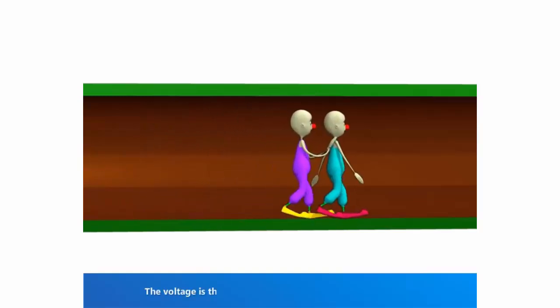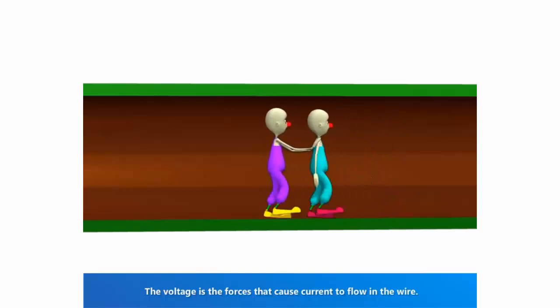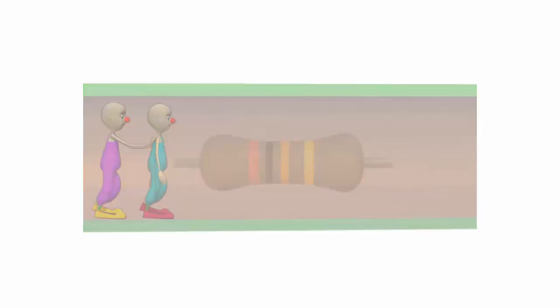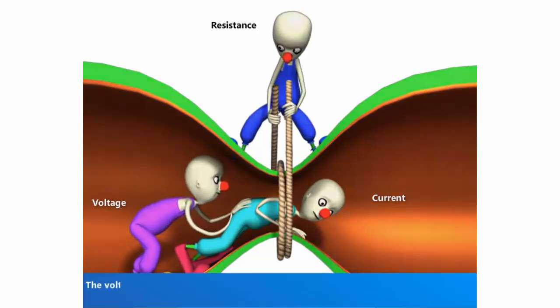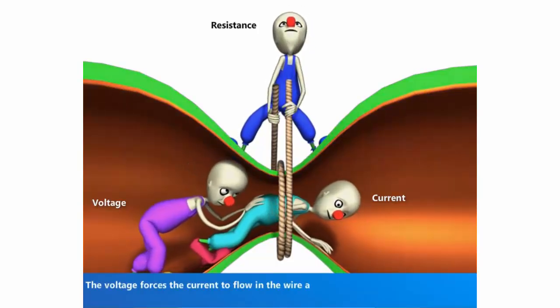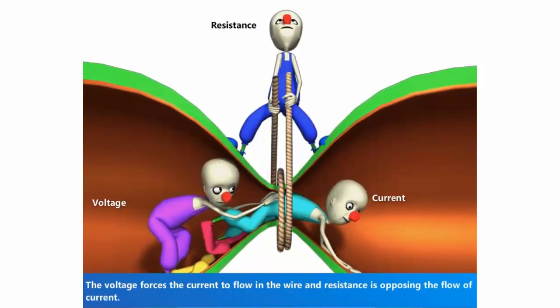Voltage is the force that causes current to flow in the wire. Assume resistance is present in the conductor. The voltage forces the current to flow in the wire, and resistance opposes the flow of current.